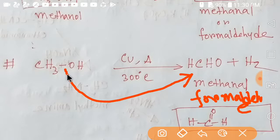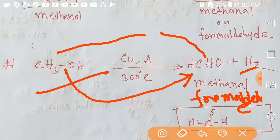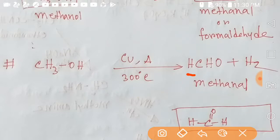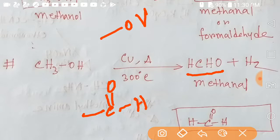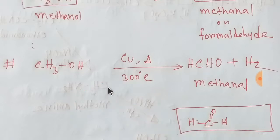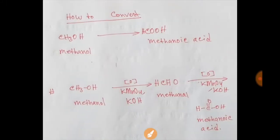Along with formaldehyde, hydrogen is also produced. This is called dehydrogenation of alcohol. By dehydrogenation of alcohol we get methanal or formaldehyde from methanol. You know that methanal is an aldehyde, and the functional group of aldehyde is CHO, while the functional group of alcohol is OH.